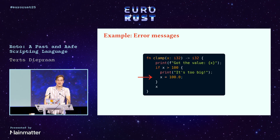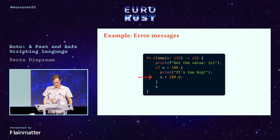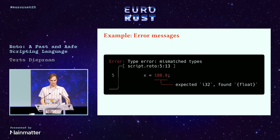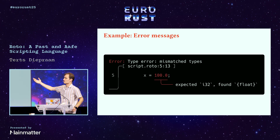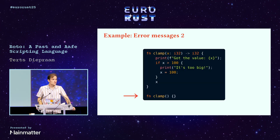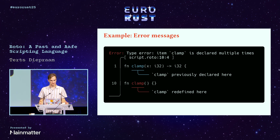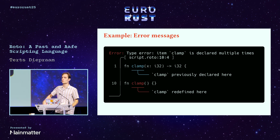If we were to make a mistake — for example, here you might already see what's wrong: we're assigning a float to an integer. That can't be right. We throw an error: we expected an I32 value here, but we got a float. Another example: if you define the same function name twice, we show where you made the error with the second function, but also where the previous declaration was that it conflicts with.